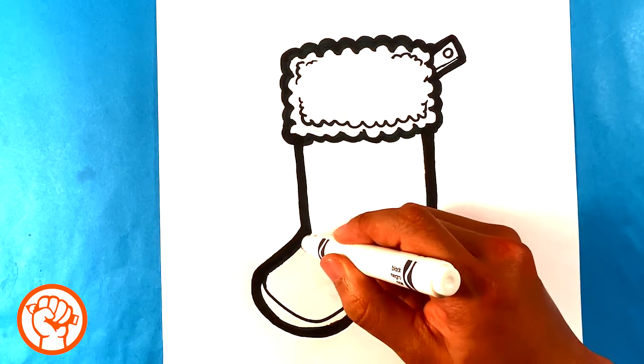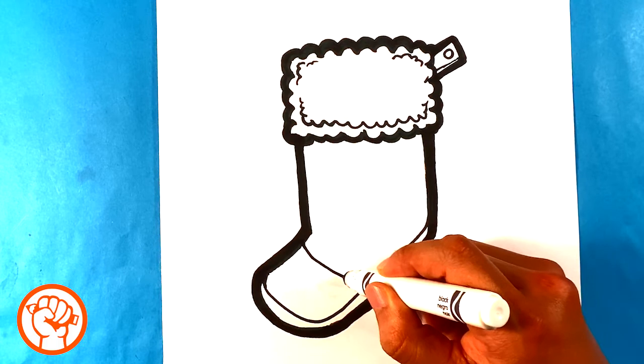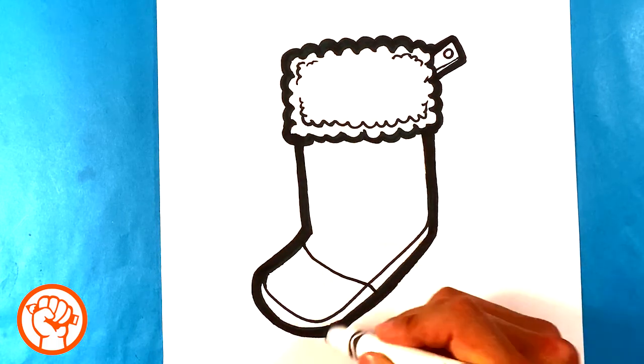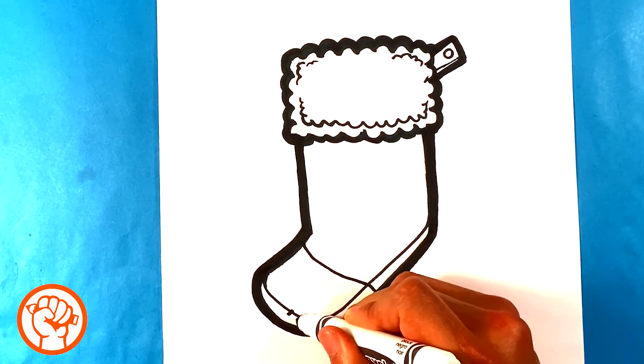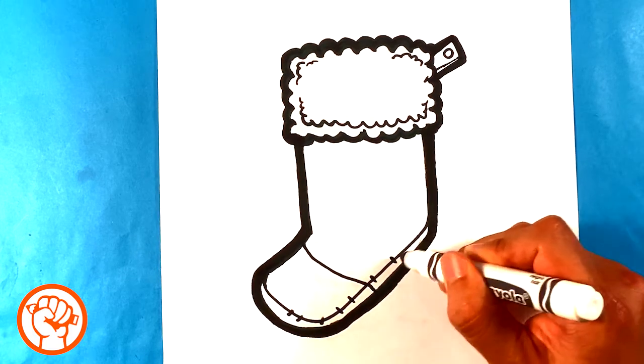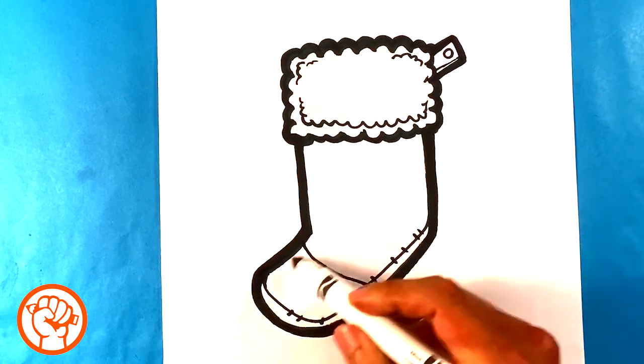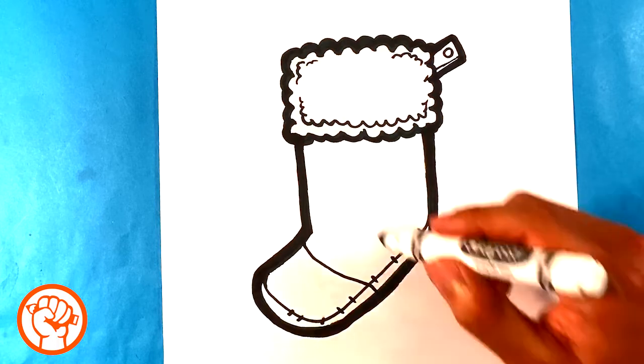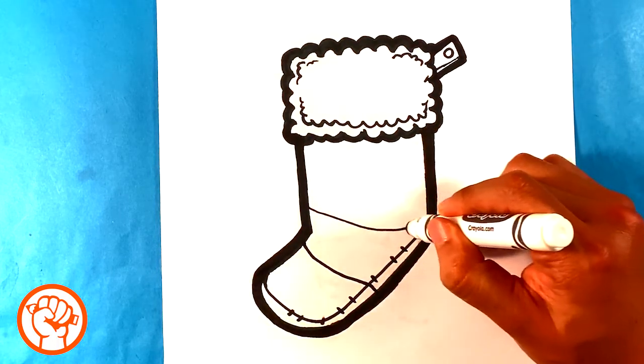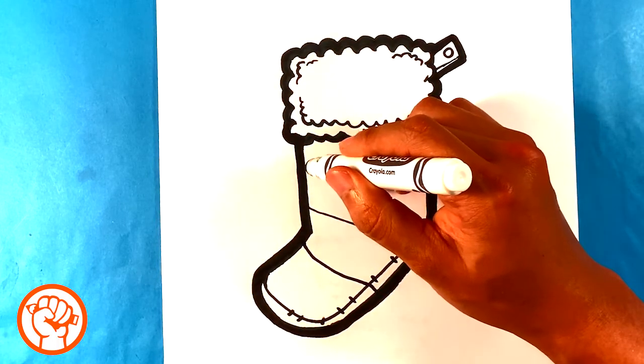You could also do this thing at the end of the sock. Some of them have designs at the end of it. Right here what I was trying to do, I was drawing the seam of the sock, and this is more like the color that I put there across. So you can even do multiple colors, like a candy cane.